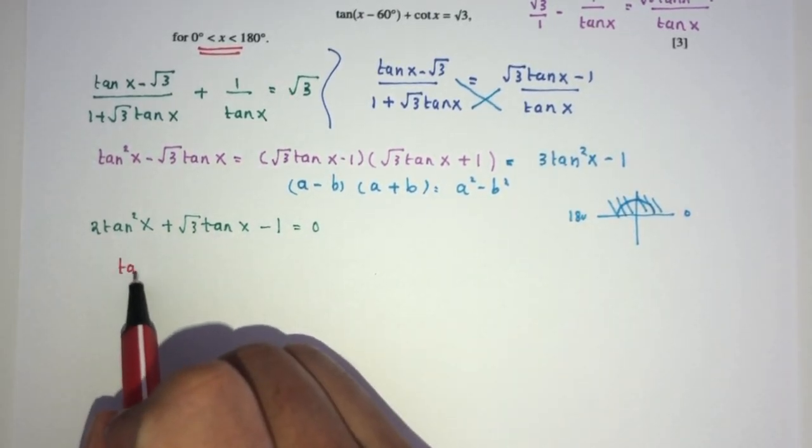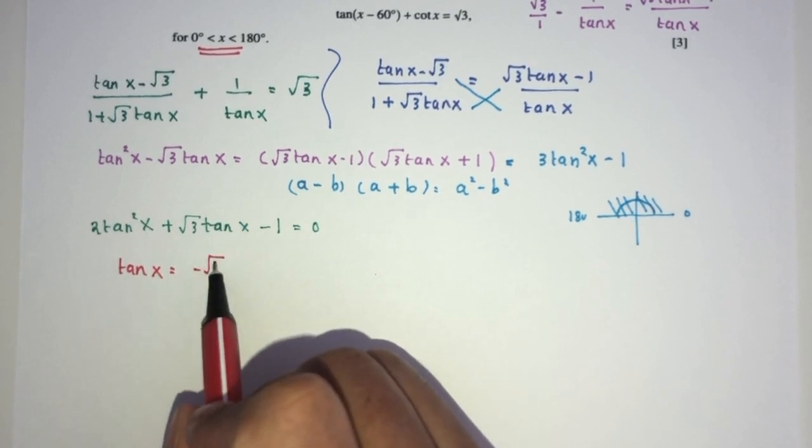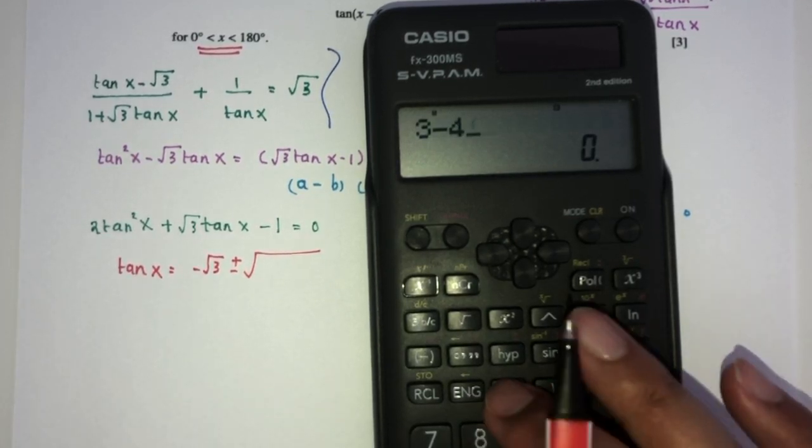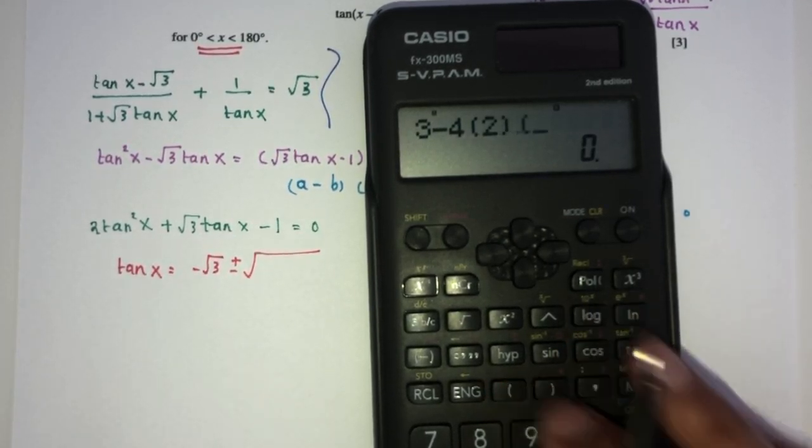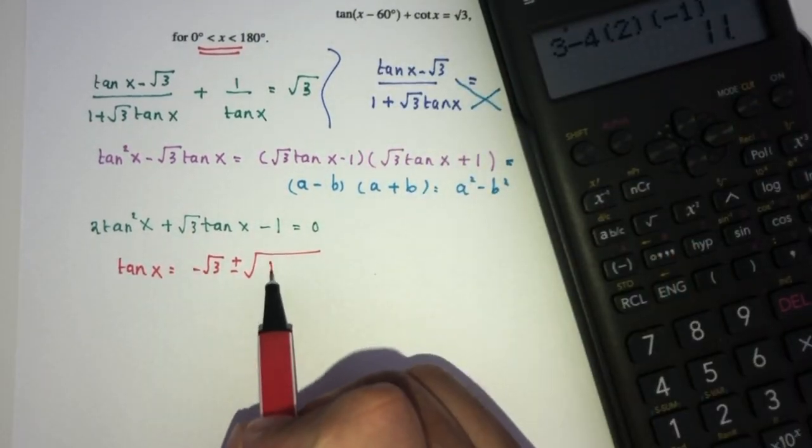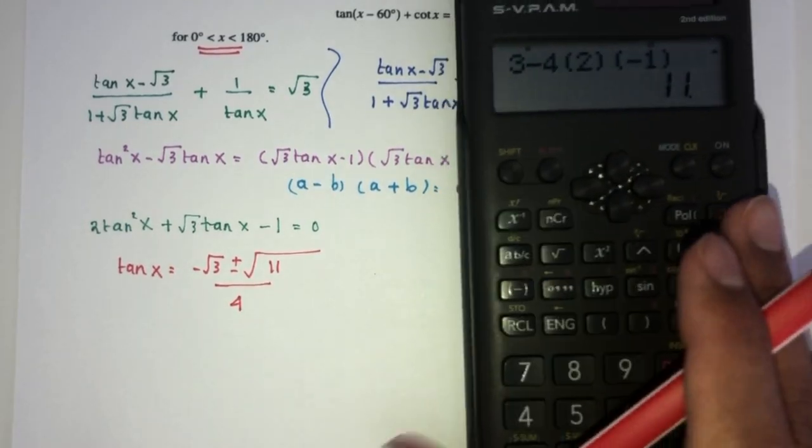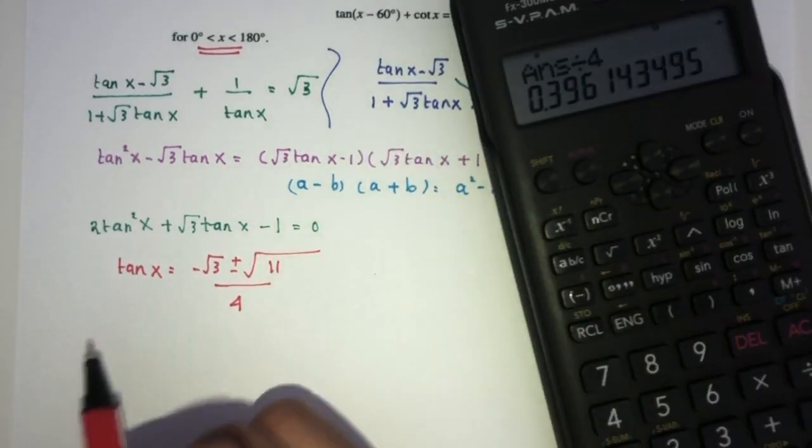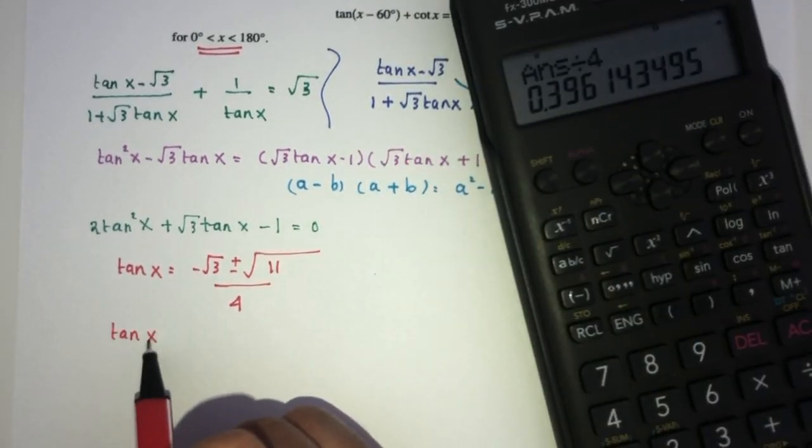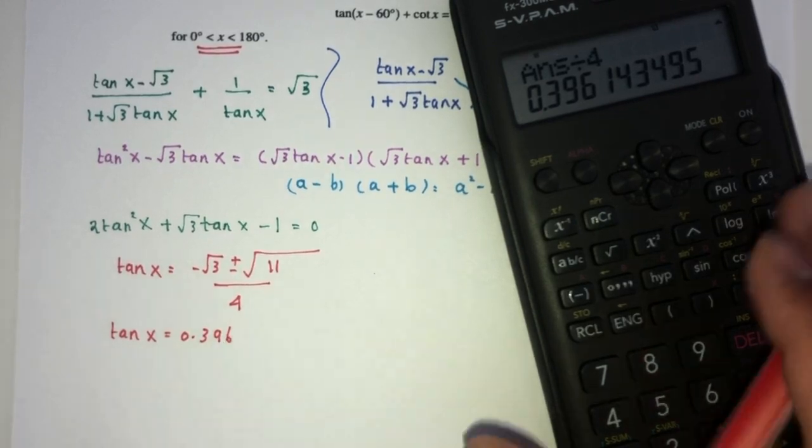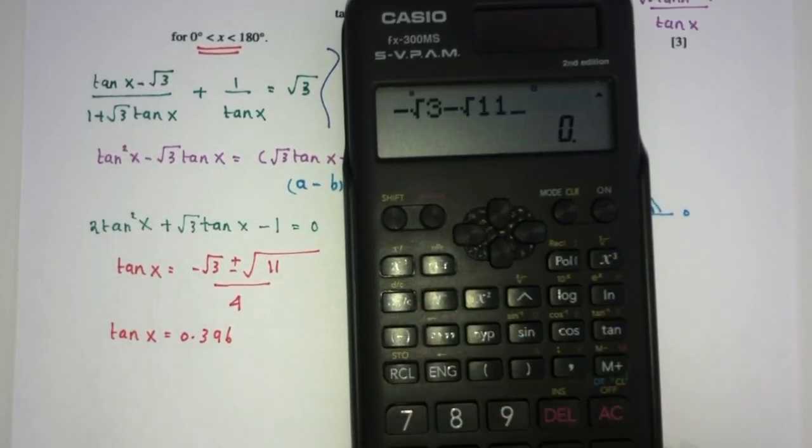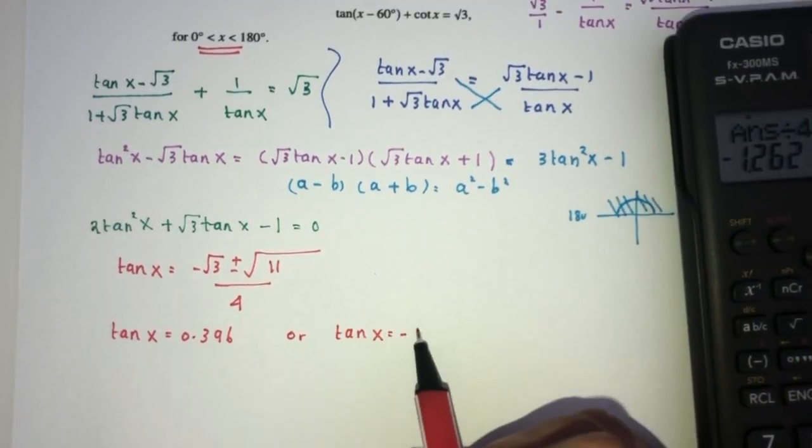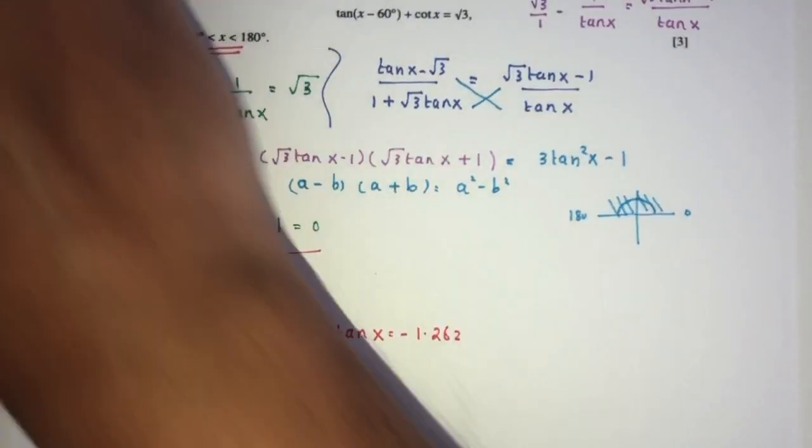That will be tan of x equals minus b, which is root 3, plus or minus b squared will be 3, minus 4 times a times c. That will be 11, divided by 2a, which is 4. Now for the first value will be minus root 3 plus root of 11 divided by 4. So tan of x can be equal to 0.396. Now minus root 3 minus root of 11 divided by 4, or tan of x could be minus 1.262.